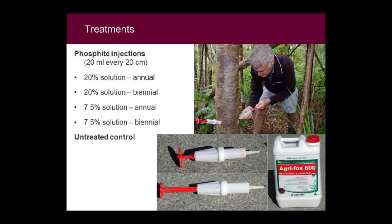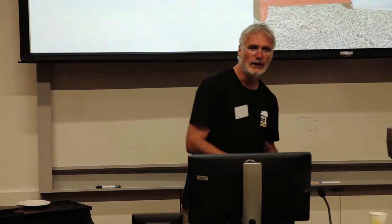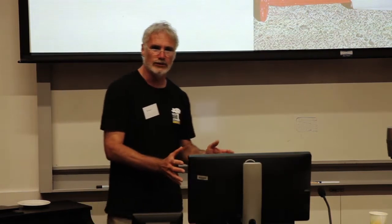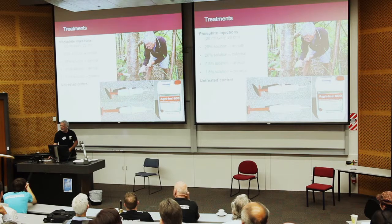For the injection treatment itself, we used the standard phosphite Agriphos 600 — a common agri-chemical you can buy in any rural supplies store. We tried two different concentrations: a quite high 20%, and a relatively low 7.5% solution. Our initial plan was to do annual and biennial treatments and compare them against the untreated control. We've done an annual treatment for two years — in other words two treatments — versus a single upfront treatment and our untreated control. We may leave it sitting like that for a while to see what sort of longevity we get out of those treatments.